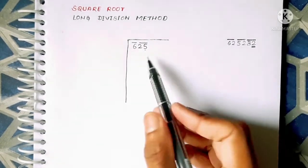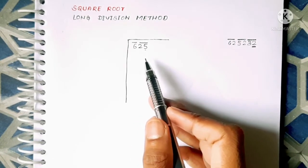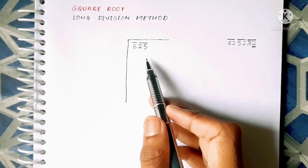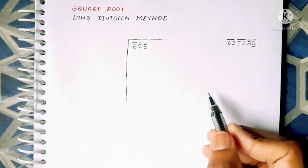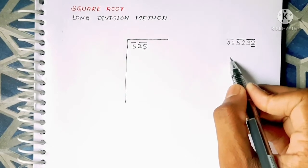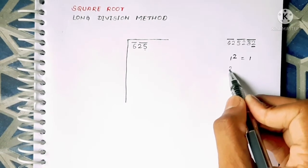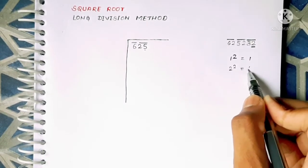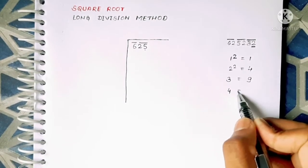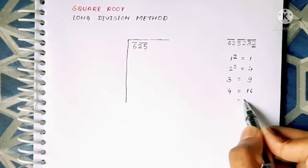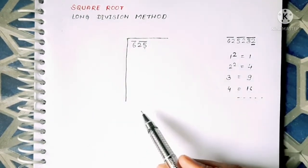Like that only we have to do it here. To understand the concept of square root we should also know about the squares of numbers like 1² = 1, 2² = 4, 3² = 9, 4² = 16 and so on. You must remember all these things to solve this square root.